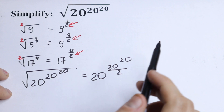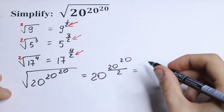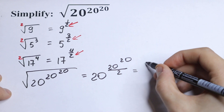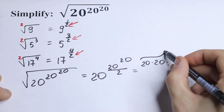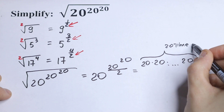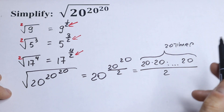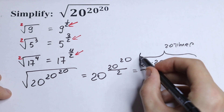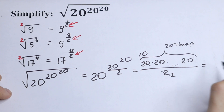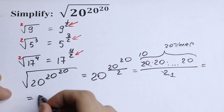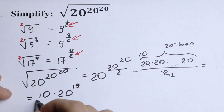We use the same logic, so let's simplify this a little bit. We have 20 times 20 times 20... times 20, divided by 2. We take one 20 from here, which gives us 10, and right here we will have 19 times 20. So 20 times 20 is 19 times, and we will have 10 times 20 to the power 19 over 2.